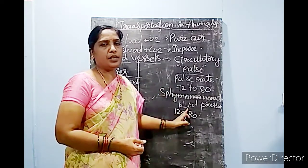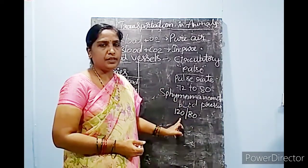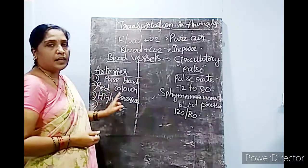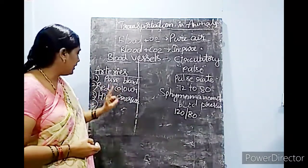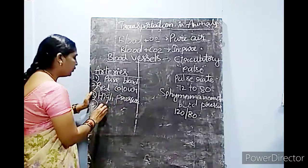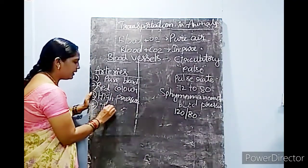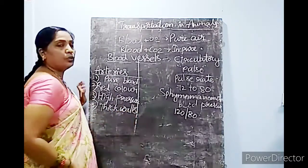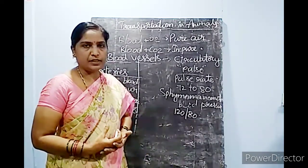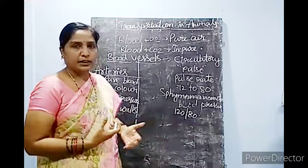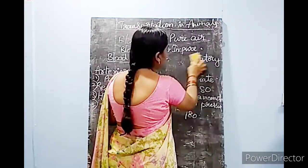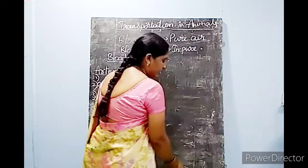So, arteries are red in color, carry pure blood, the blood moves with high pressure, and they have thick walls. They have very thick walls because they need to bear the pressure of the blood. Blood is moving with pressure in these blood vessels, that's why their walls are very thick. Now we understood about one type of blood vessel. We will see the other types present in the circulatory system.